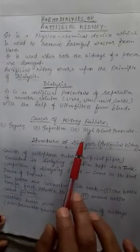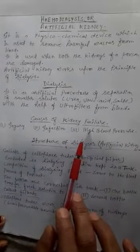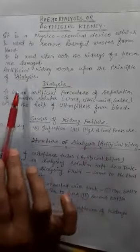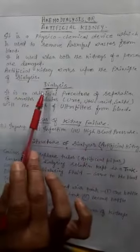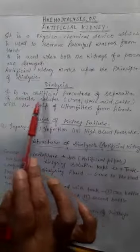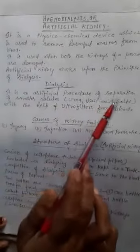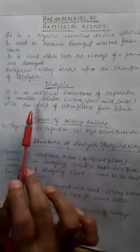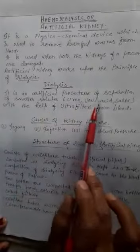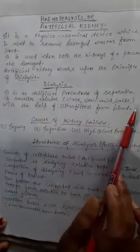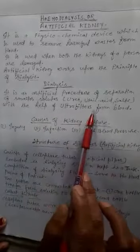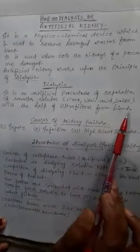The nephrons are not in working condition. Then dialysis helps in removing the wastes. Dialysis is an artificial procedure of separation of smaller solutes — which are urea, uric acid, and salts — with the help of ultrafilters from blood.